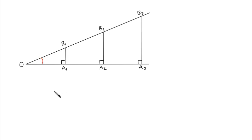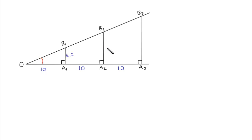These vertical lines have all been drawn the same distance apart. The distance from O to A1 is 10, the distance from A1 to A2 is 10, and from A2 to A3 is 10. These vertical lines have three different heights: this one is 4.3, this one is 8.6, and this one is 12.9. We're going to look at the ratio between the vertical height and the horizontal height in each triangle.